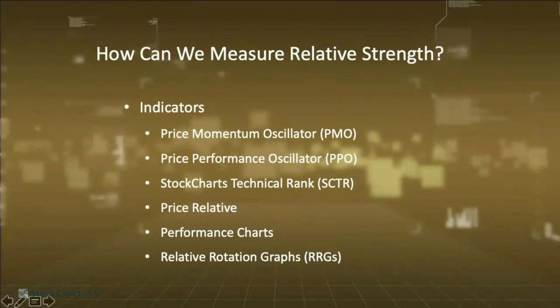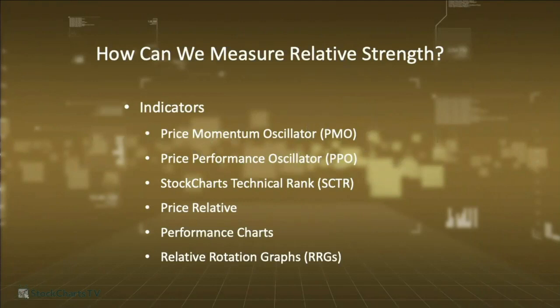How are the different ways we can measure relative strength? You can use the PMO and the PPO — they are on one chart and each measures the internal strength of that particular security, but they also have the added benefit of being what I like to call normalized. They take price into account but are not subject to the price level between one security and another. So you can actually compare PMO and PPO readings from, say, an Amazon chart to a Ford Motor Company chart even though the price differences are huge. It does not matter because of the way these indicators are structured.